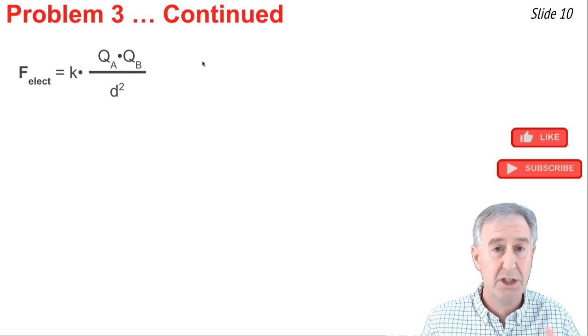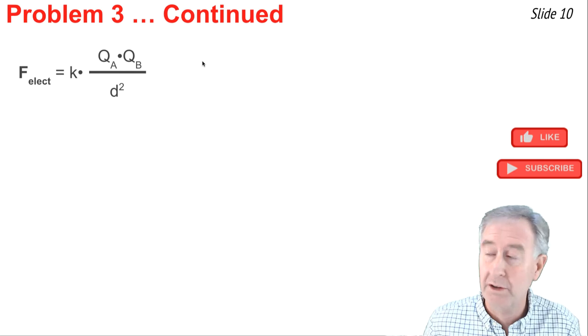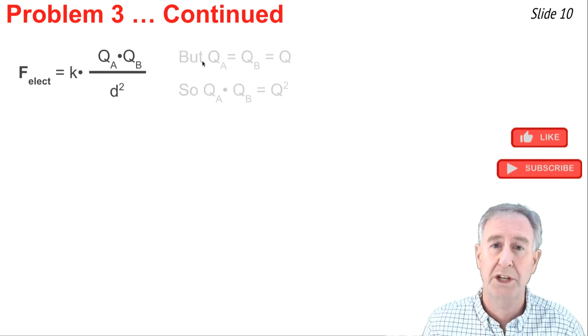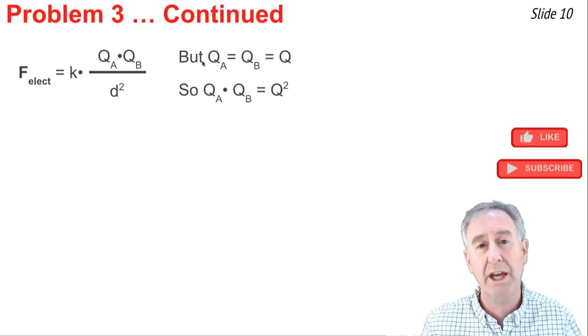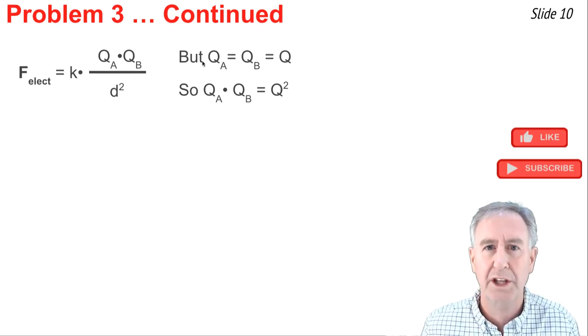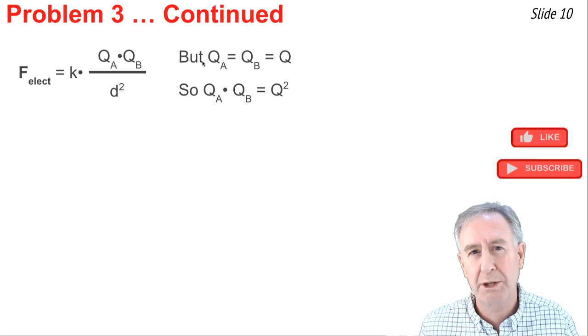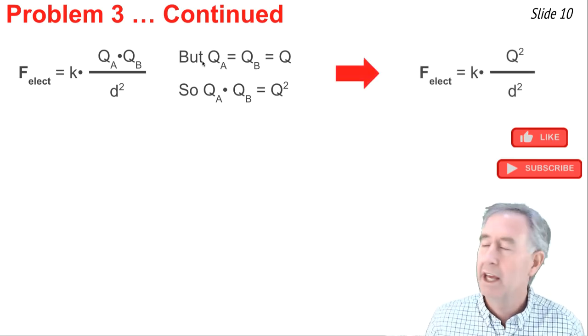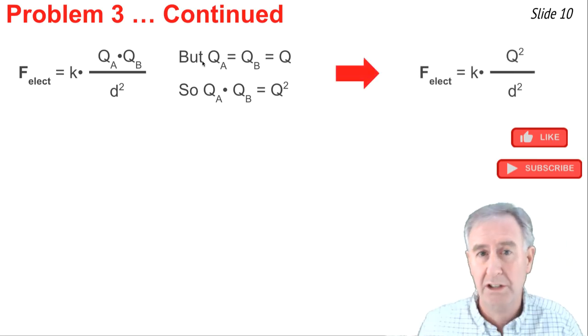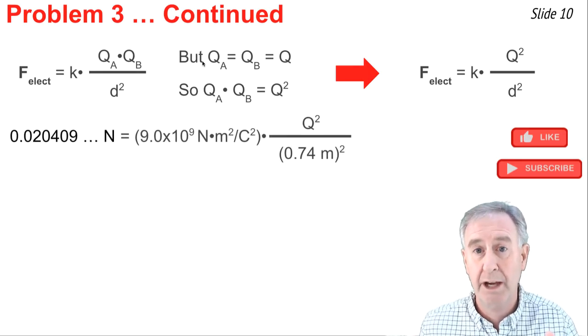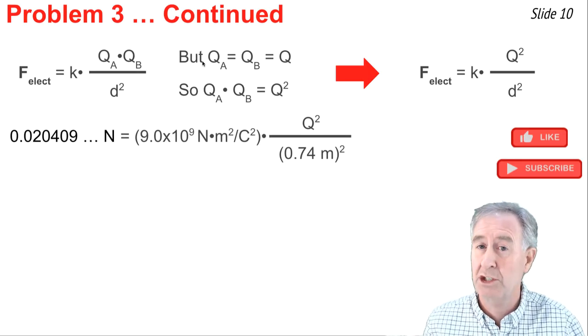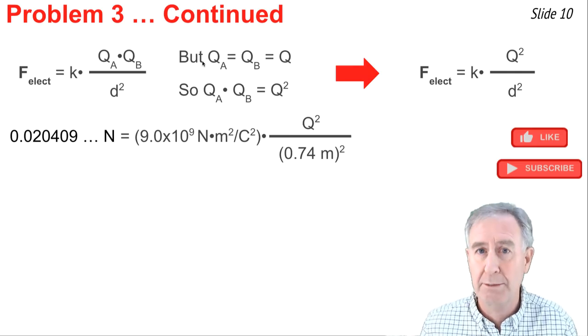So I'm now on the home stretch of this very long problem and I'm trying to calculate the value of Q. I know the value of D and I just calculated the value of F electrical in this Coulomb's Law equation. But what I know is that the two balloons are charged with identical amount of charge. And so QA equal QB, and I'm just going to call it Q. So QA times QB equal Q times Q, or Q squared. And I'm going to rearrange Coulomb's Law to look something like that. I know F electrical, I substitute it in, I know the value of D is 74 centimeters, I change that to meters and squared, I substitute that in, and I substitute in the value of K.